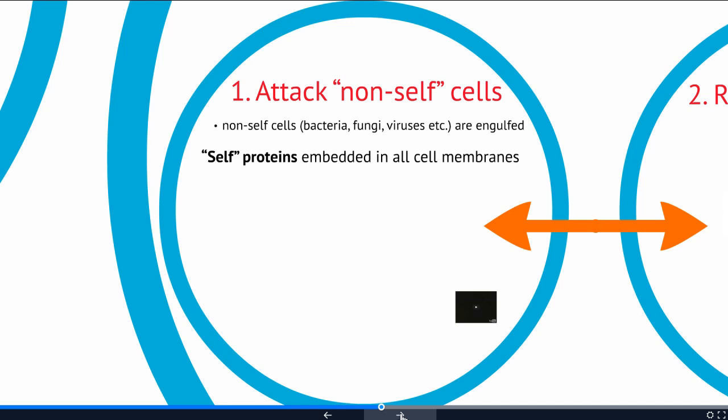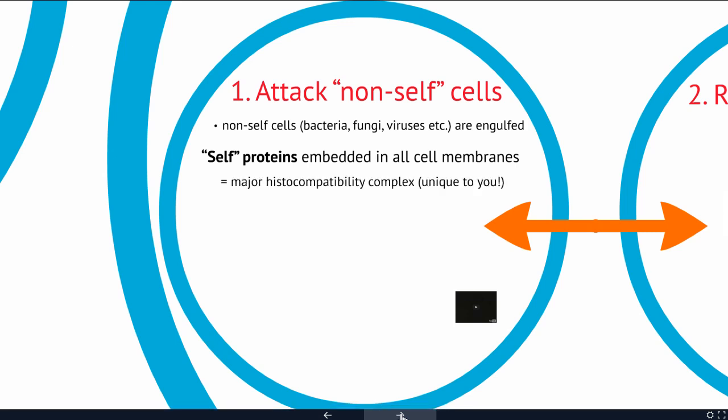The immune system checks cells that move through — like bacteria, fungi, or viruses — and if they don't have those cell proteins, they're going to be killed and recognized as something that shouldn't belong. These cell proteins are called your major histocompatibility complex, and they're unique to each person. This is why your immune system can reject organs — it doesn't recognize the major histocompatibility complex of a transplanted organ.